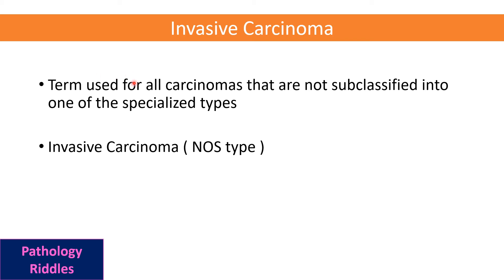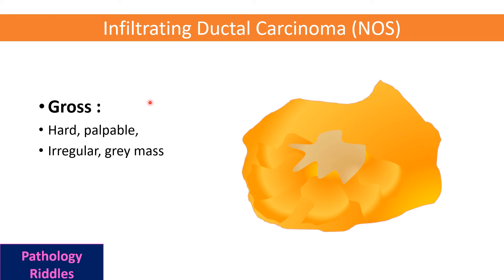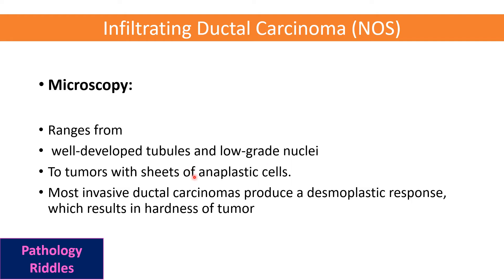Invasive carcinoma refers to all carcinomas not sub-classified into any special type — invasive carcinoma NOS (not of special type). The most common type is infiltrating ductal carcinoma, not of special type, associated with its precursor lesion DCIS. Clinically the patient presents with a hard irregular lump, mostly in the upper outer quadrant. Grossly it appears as a very hard, irregular, grayish-white mass.